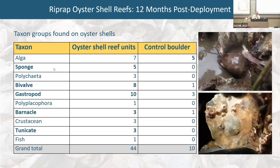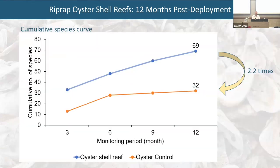Looking at which species benefited most — the big winners were sponges, bivalves, gastropods, barnacles, and tunicates. Most species are filter feeders, so they also provide biofiltration capacity to the area and may help clean the harbor. Looking at the time series of species numbers on different structure types, after six months the boulders showed very few additional species, but on the oyster shell reef units, the number of species kept steadily increasing. I'm pretty sure if we leave them for a longer time, we will find more and more species.